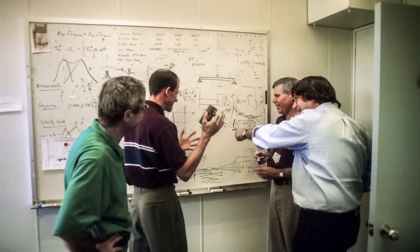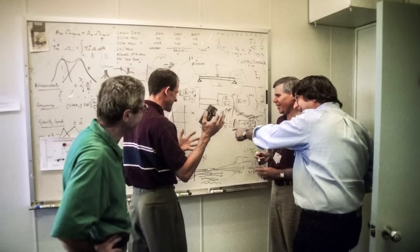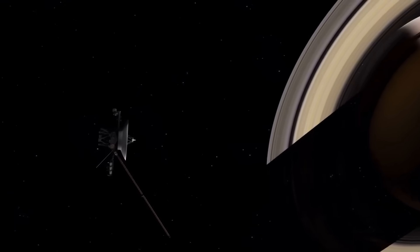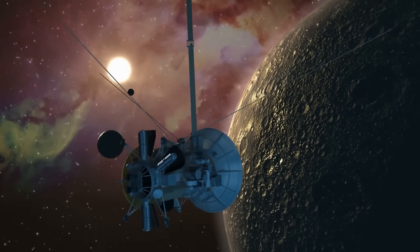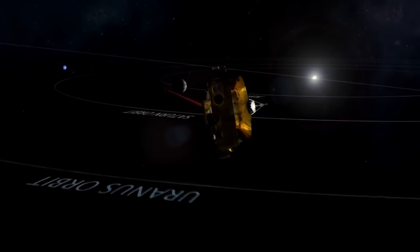This changes how we think about long-term interstellar travel. Any future spacecraft will not just coast through emptiness. It will pass through environments with structure, pressure, and resistance. Voyager 1 is revealing this not in theory, but in practice.